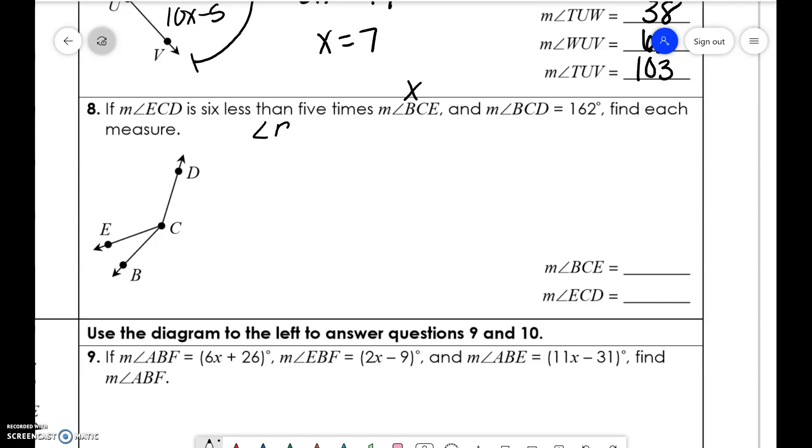So that means angle BCE is x. And angle ECD is 6 less than 5 times x. So 5x minus 6. You are always going to write that number with its variable first. Okay.